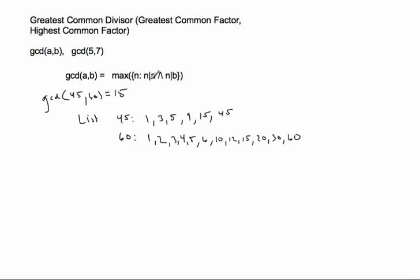So 15 is the greatest common divisor. If we wanted to actually figure out the set, it would be the maximum. Let's list all the common divisors: 1 is a common divisor, 3 is a common divisor, 5 is a common divisor, and 15. So it's the maximum of that set and the maximum of that set is 15. That's how we figure out the greatest common divisor.